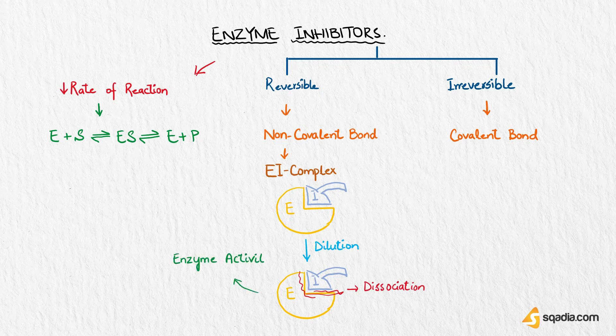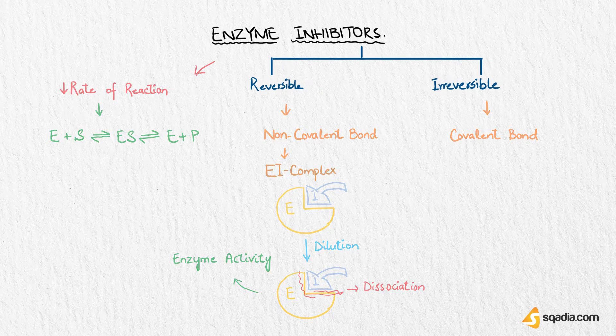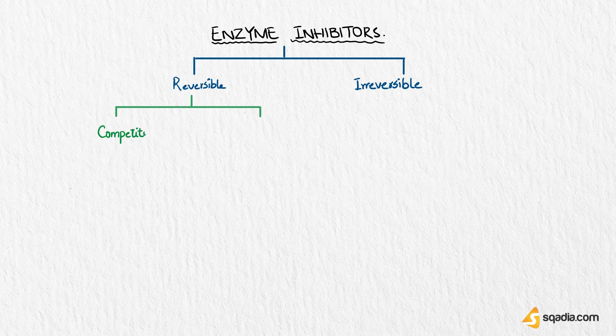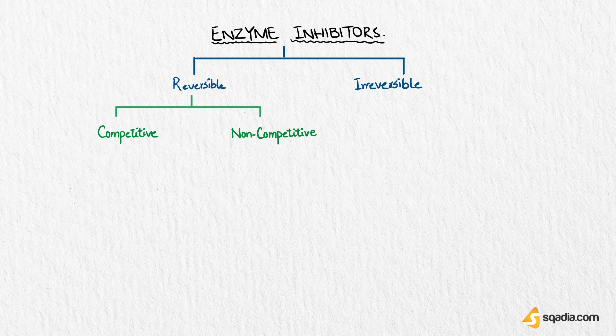And the two most commonly encountered types of reversible inhibition are competitive and non-competitive inhibitors. So there are two main types of reversible inhibitors: number one, competitive, and number two, non-competitive inhibitors.